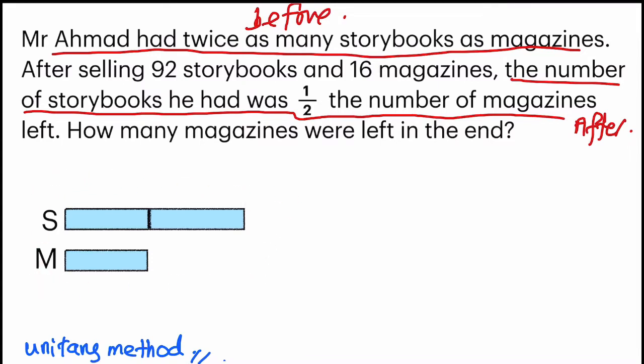Mr. Ahmad had twice. So under storybooks, there are two units. And magazine, one unit. And how do I combine the after model inside? I have to do it with the help of the statement.